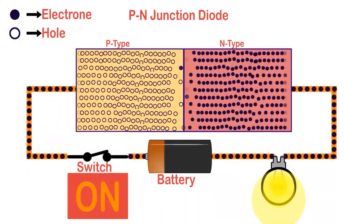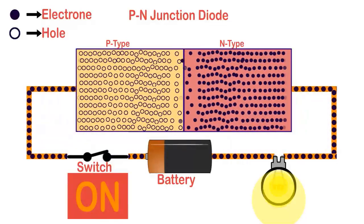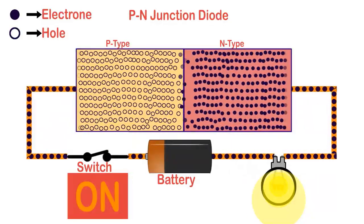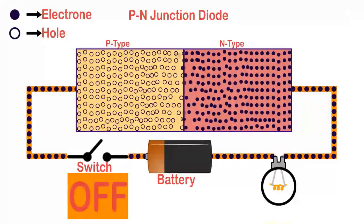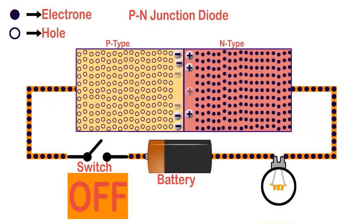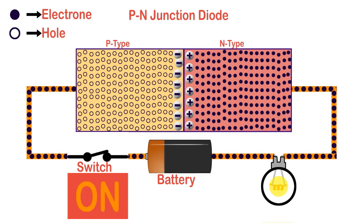We hope you now have an idea about how a diode works in forward biased condition. In our next video, we will discuss the working of a diode in reverse biased condition.